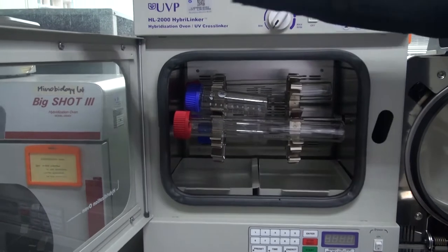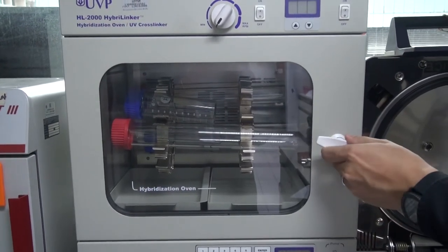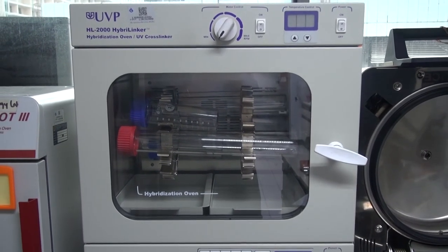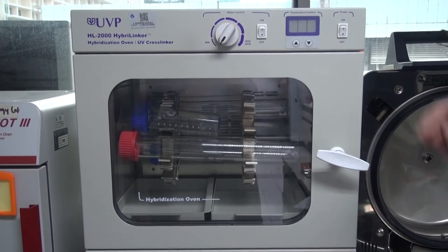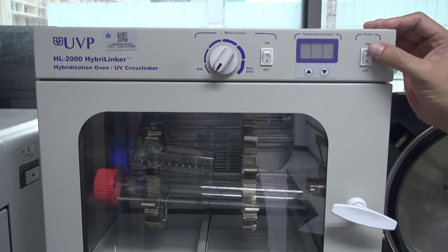To operate this oven, first close the door. And then turn on the main power switch located on the right of the control unit here.